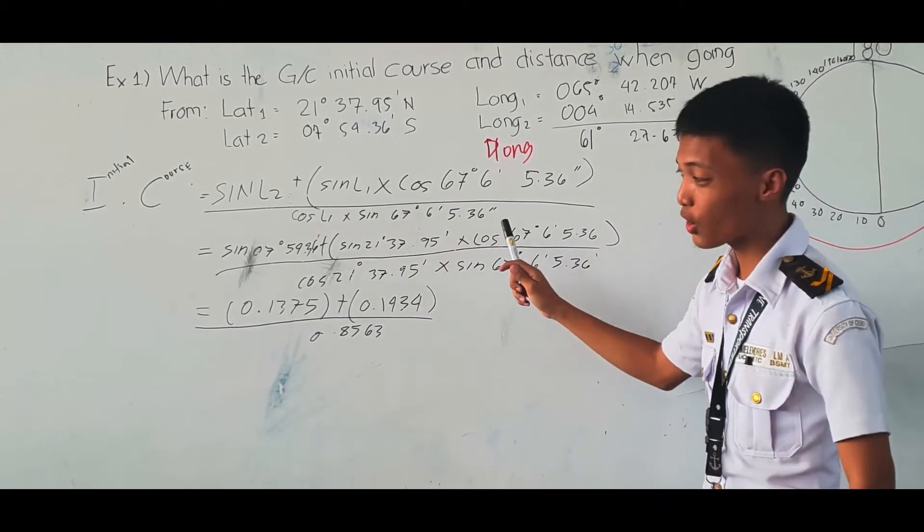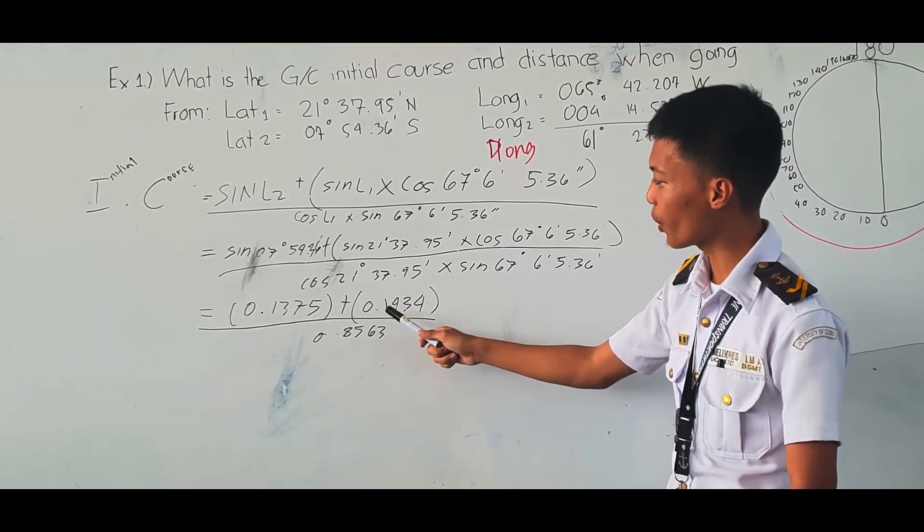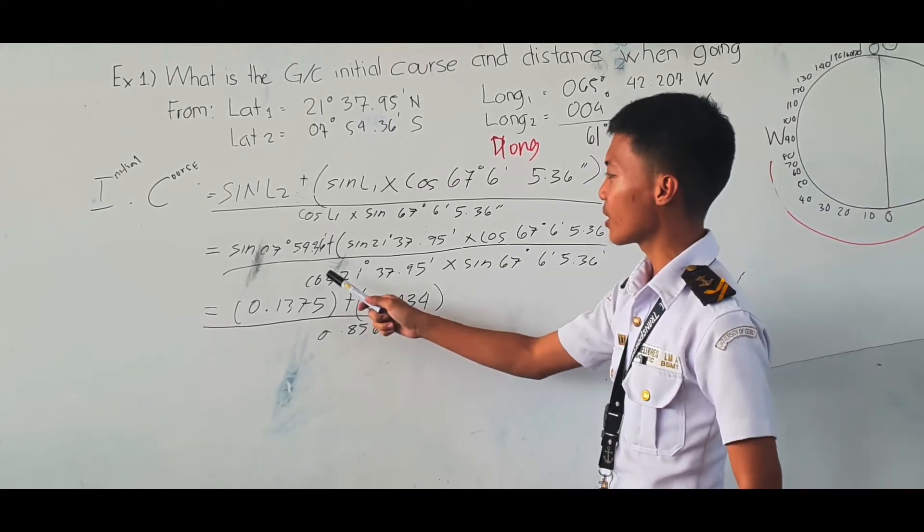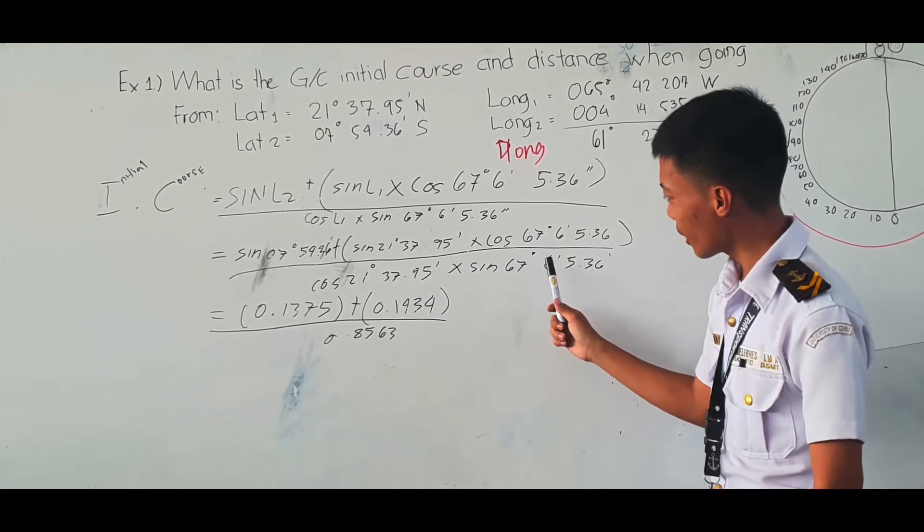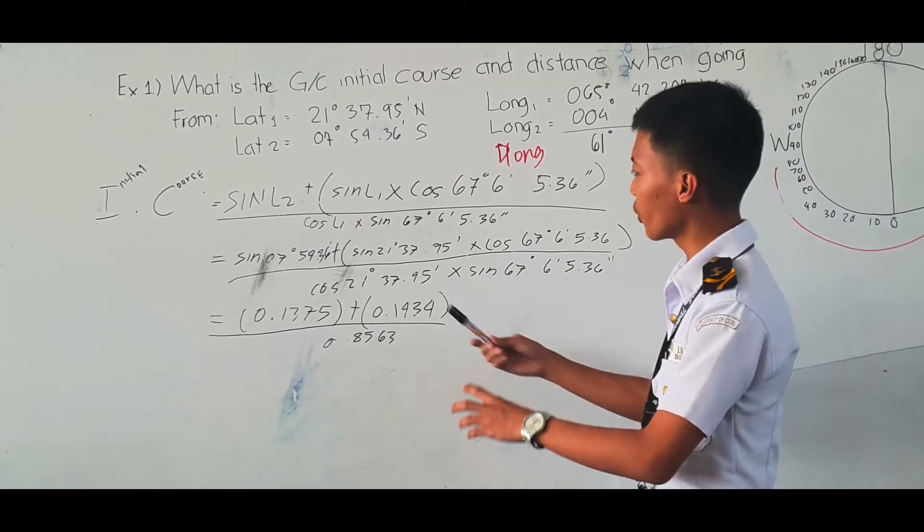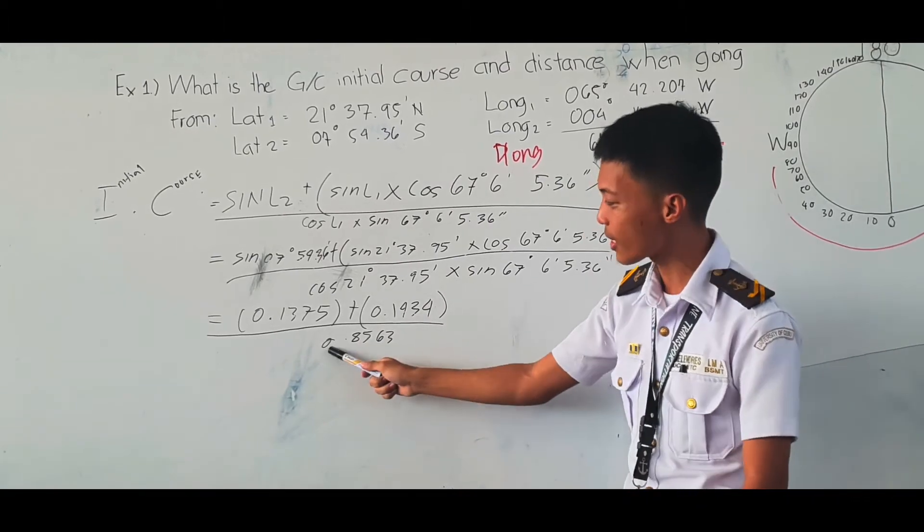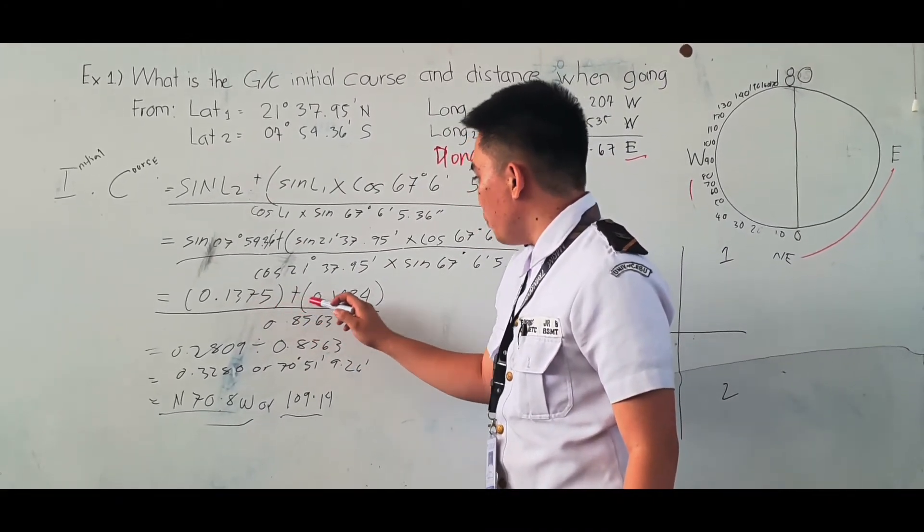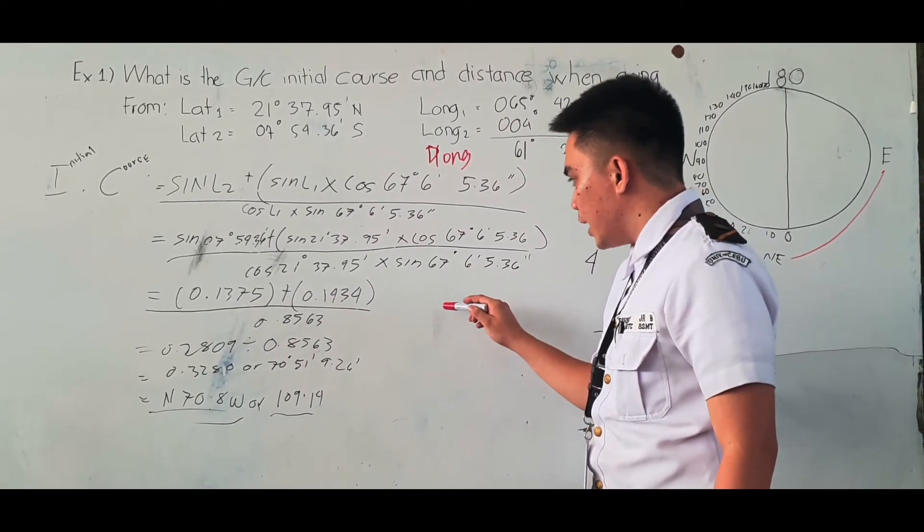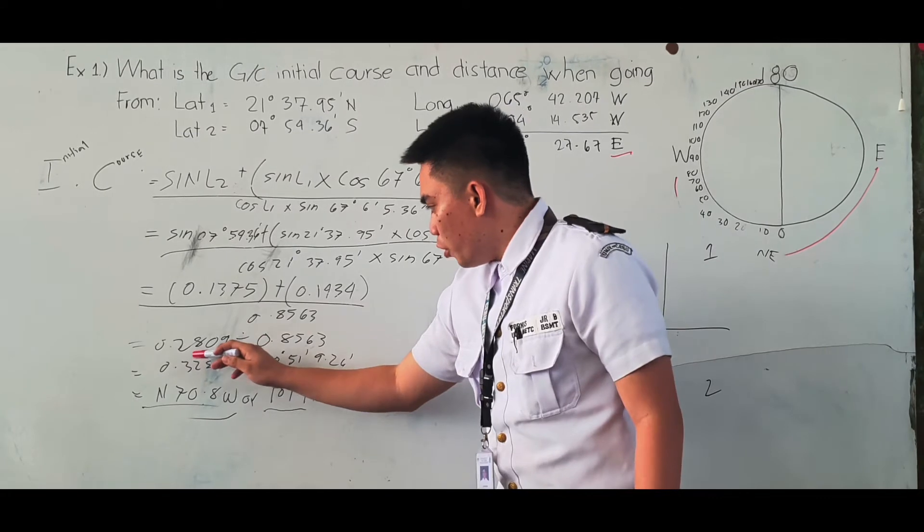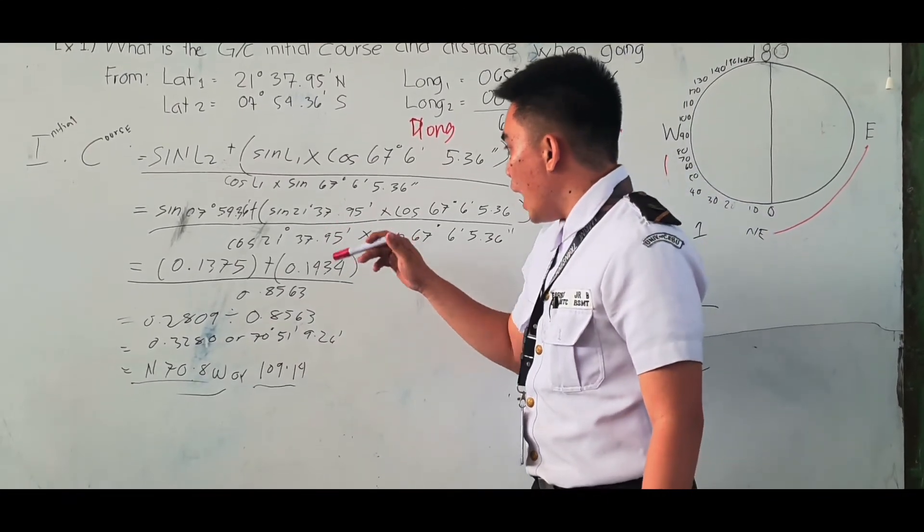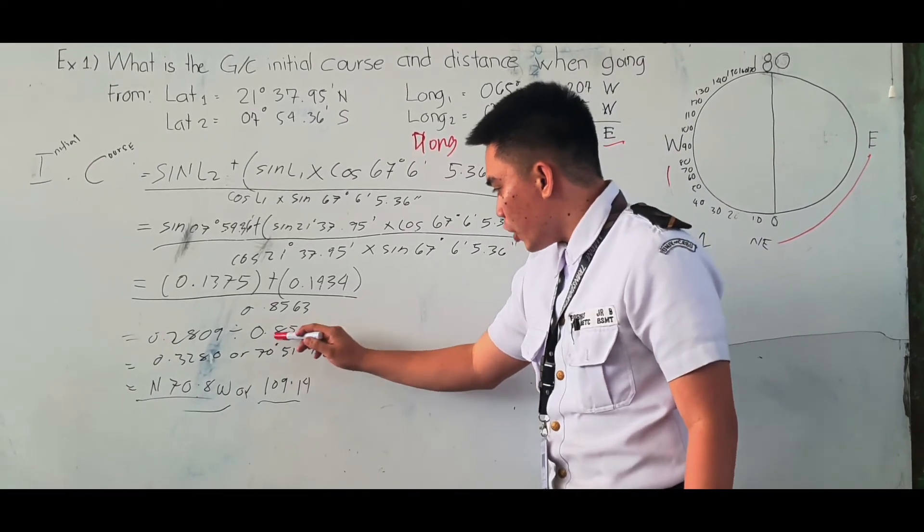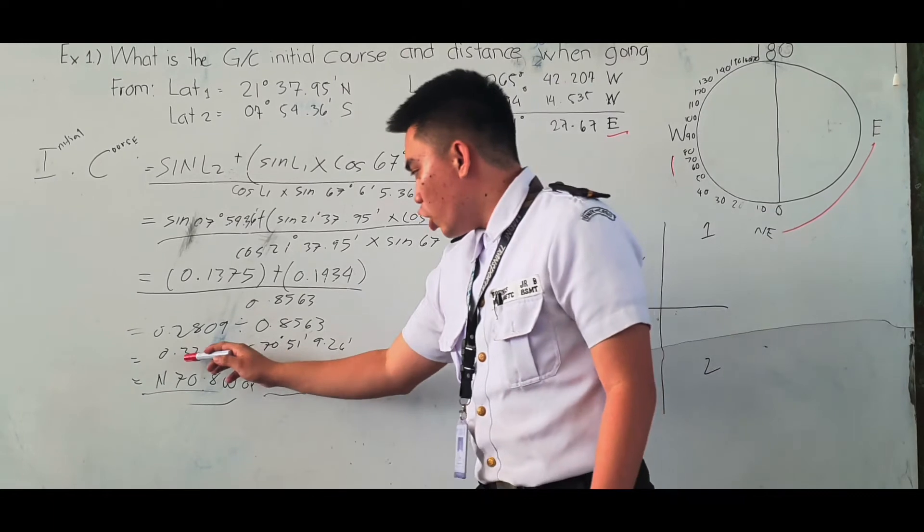The answer for this, you need to multiply to get 0.8563. As you can see, the product of sin L2 plus the product of sin L1 times cos distance is 0.2809. We divide it by cos L1 times sin distance. The product is 0.8563, so the answer is 0.3280.